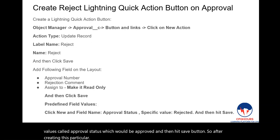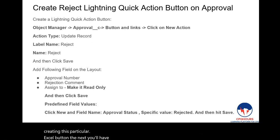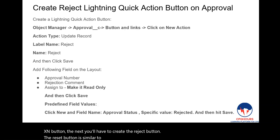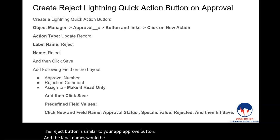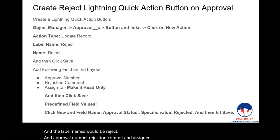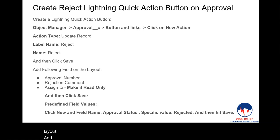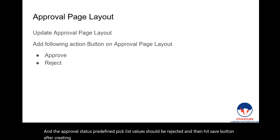After the Approve button, create a Reject button in a similar fashion. The label name should be 'Reject,' and add Approval Number, Rejection Comment, and Assign To to the layout. The predefined picklist value for Approval Status should be set to 'Rejected,' then hit Save. After creating both Lightning Quick Action buttons, add the Approve and Reject buttons to the Approval page layout.